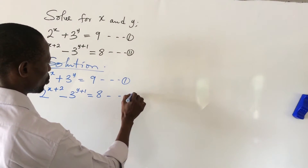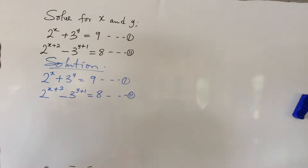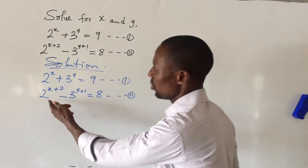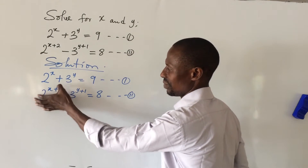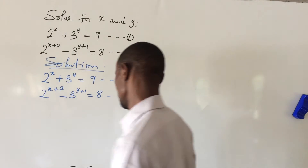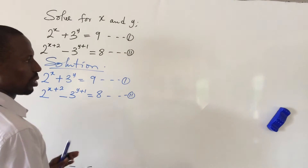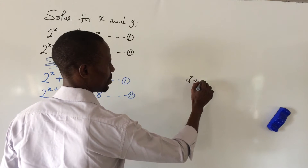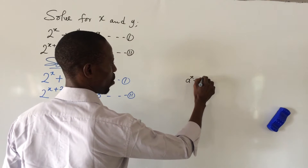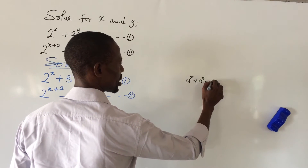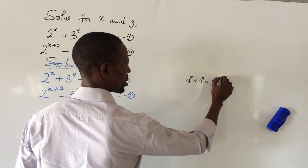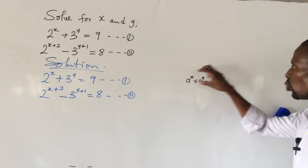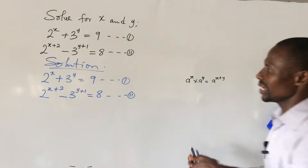For equation two, we have to rearrange it. We go to the law of indices, which states that when you have an expression like a to the power of x times a to the power of y, this is the same thing as a to the power of (x plus y), because the bases are the same so you add the powers.